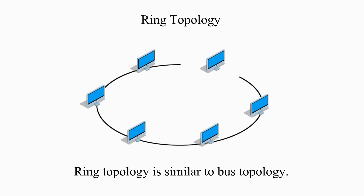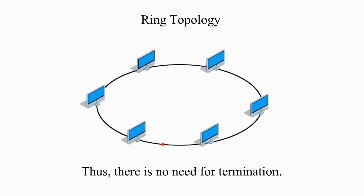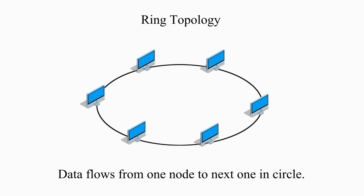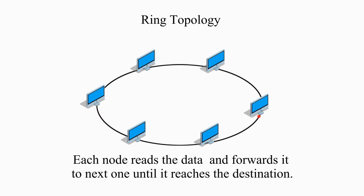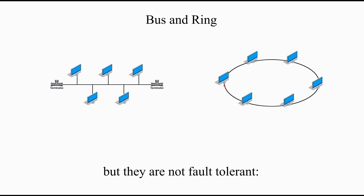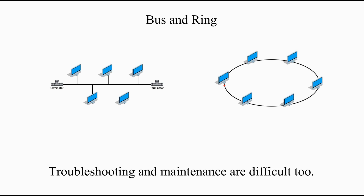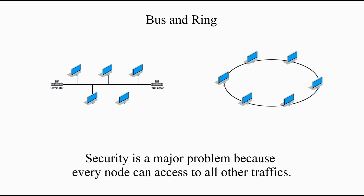Ring topology is similar to bus topology. All nodes are connected to a cable that forms a closed loop, so there is no need for termination. Data flows from one node to the next in a circle, and each node reads the data and forwards it until it reaches the destination. Both bus and ring topology are simple and inexpensive, but they are not fault tolerant — one single point breaks and the whole system will go down. Troubleshooting and maintenance are difficult too, and security is a major problem because every node can access all other traffic.